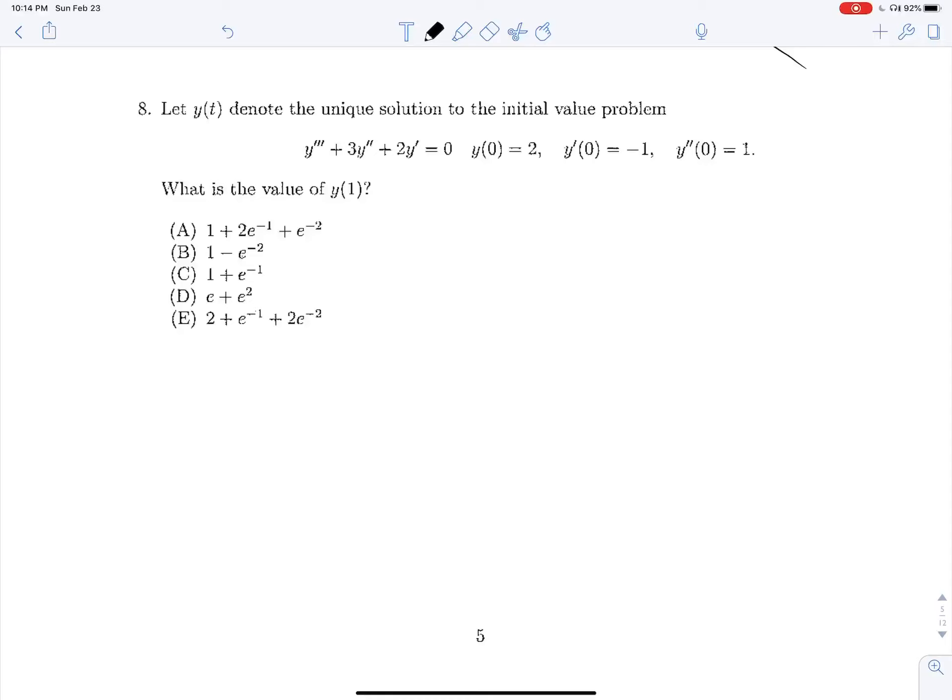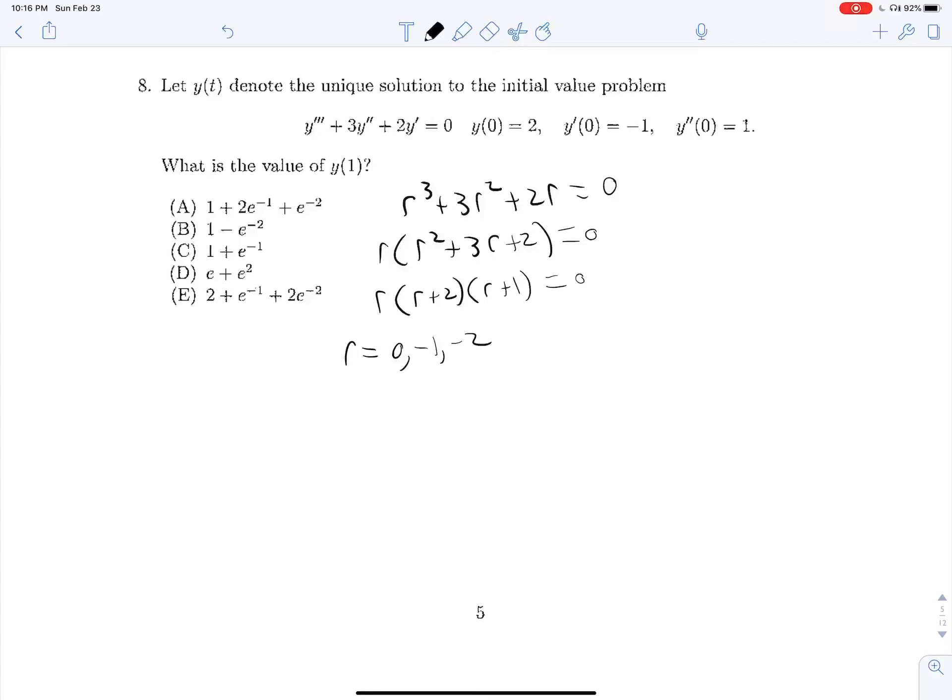Okay, let y of t denote the unique solutions to the initial value problem y triple prime plus 3y double prime plus 2y prime is equal to 0, and we're given some initial values. So let's pull out our characteristic equation. This will be r cubed plus 3r squared plus 2r is equal to 0. Let's factor out an r, r squared plus 3r plus 2 is equal to 0, and then we can factor this further, r plus 2 r plus 1 equals 0. So r, our roots are 0, negative 1, and negative 2.